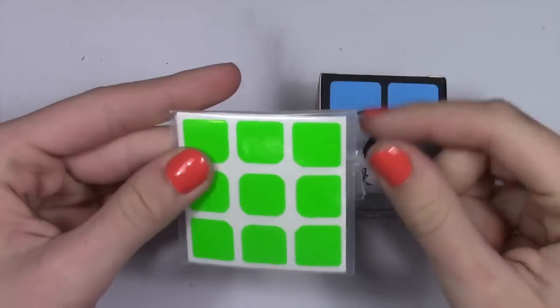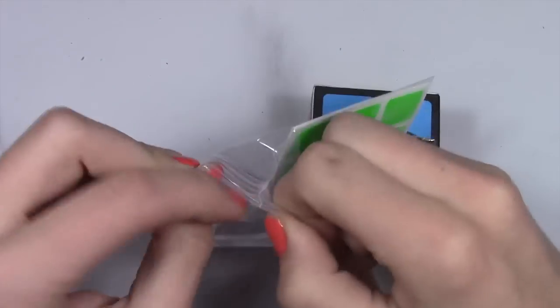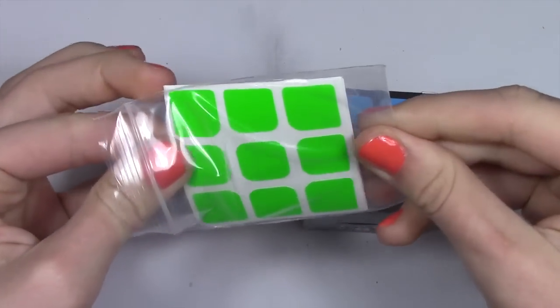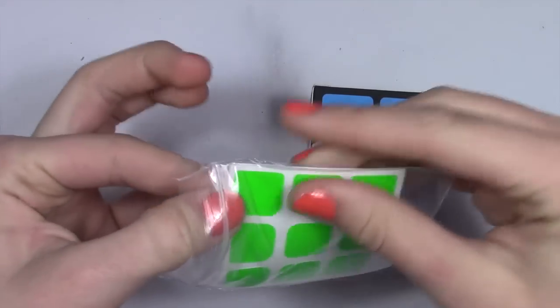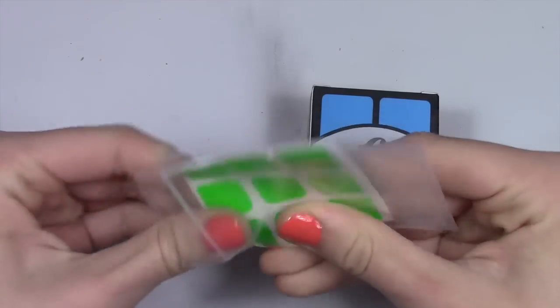In addition to sending me the cubes to test, they also sent me a set of their Half Bright stickers to use on the Uxen 3x3. I'm not a fan of the Uxen stickers at all, so I'm really happy that they sent these.